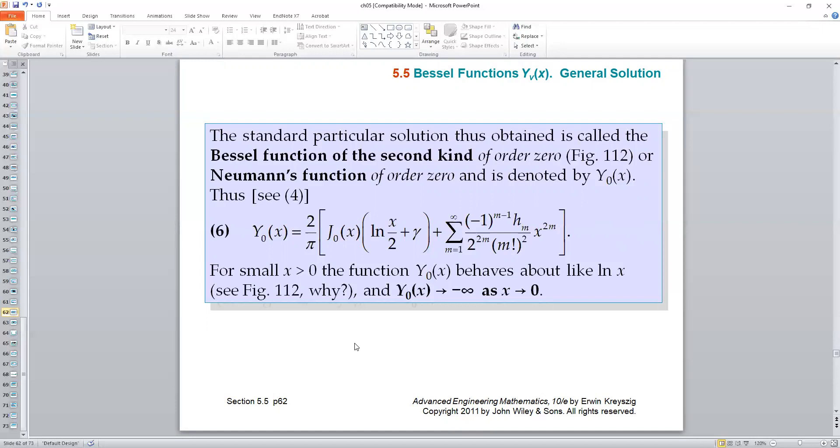Number one, this will be the second half of the solution for the Bessel equation with nu equal to 0. Number two, as x approaches 0, you can tell this log function will become a dominant term. Because the log function becomes negative infinity, Y sub n will approach negative infinity for small x.